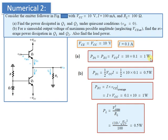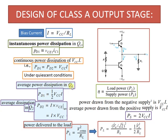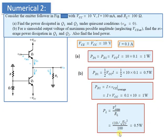For part B, for a sinusoidal output voltage of maximum possible amplitude, we neglect VCE sat. The average power dissipation in Q1 is PD1 equal to half of VCC times I, which gives 0.5 watt. PD2 is equal to VCC times I, giving 1 watt. Finally, load power equals Vout(peak) divided by root 2, the whole squared divided by RL. Since Vout(peak) equals VCC equals 10 V, dividing by root 2 squared and dividing by 100 gives a load power of 0.5 watts.